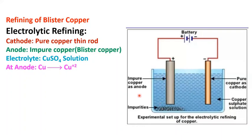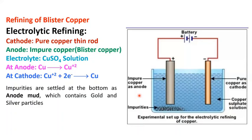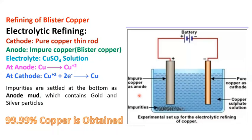At the anode, oxidation takes place — copper in the impure rod is converted into Cu²⁺ ions by losing two electrons. At the cathode, Cu²⁺ ions gain electrons to form pure copper metal (reduction). Impurities settle at the bottom as anode mud, which contains gold and silver particles and can be used to extract them. By this process, 99.99% pure copper is obtained.